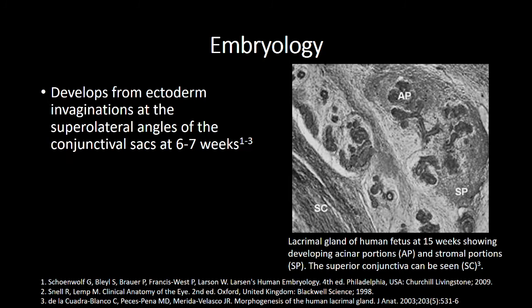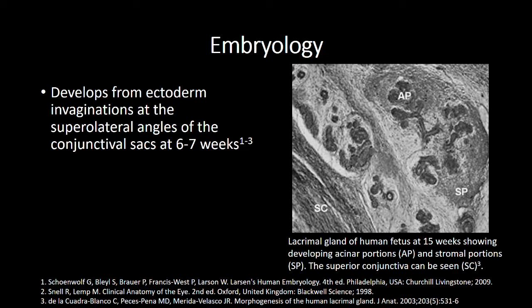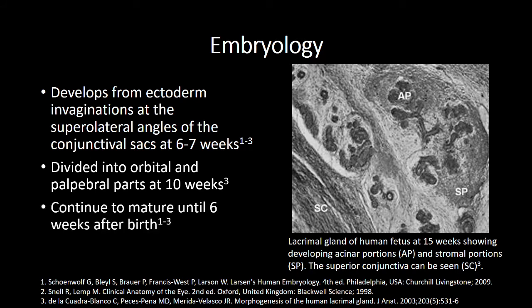Embryologically, the lacrimal gland develops from invaginations in the ectoderm of the supralateral angles of the conjunctival sacs at around 6-7 weeks gestation. They are divided by the levator aponeurosis into the orbital and palpable lobes at around 10 weeks, and continue to mature until about 6 weeks after birth.